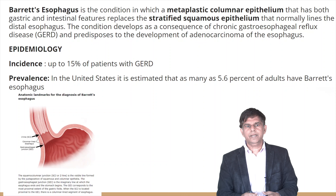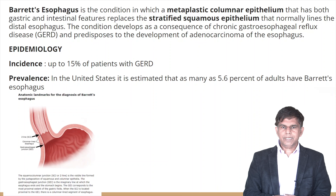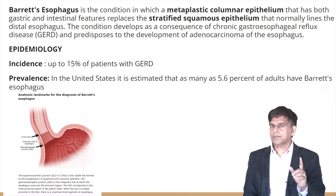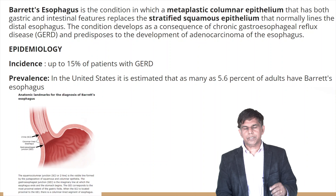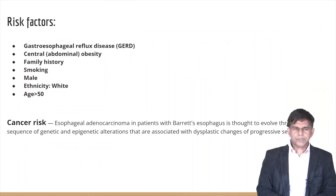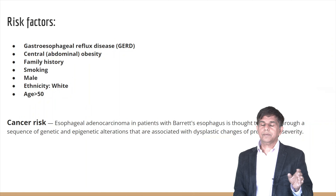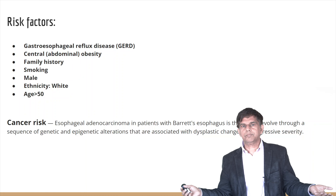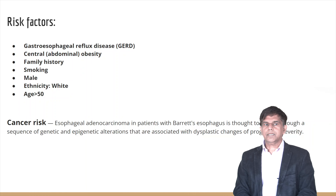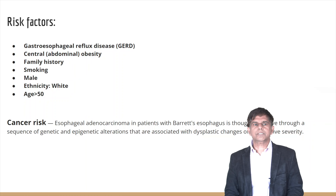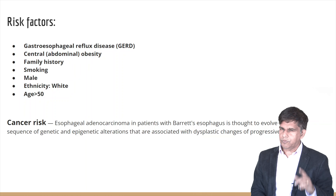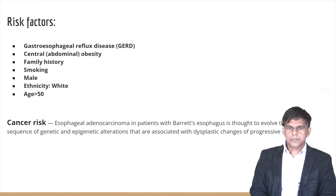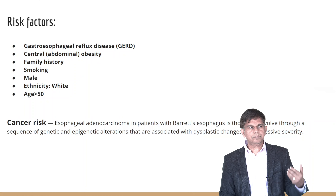The incidence is 15% in gastroesophageal reflux disease patients — very scary. In the United States, as many as 5.6% of adults have Barrett's esophagus, which is why it's important to get an EGD. Risk factors include heartburn or GERD, central or abdominal obesity, family history, smoking (very important), male sex, white ethnicity, and age greater than 50.